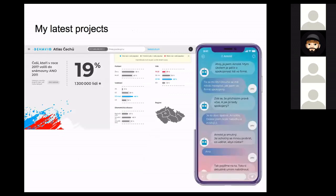One of the latest projects I was working on was Atlas Chechu from Behavio, which is a research tool for marketers. I really recommend you to look at this tool even if you're not a marketer yourself, because there's data analysis for 1,000 Czech people. The second latest project I'm currently working on is an HR chatbot — Arnold HR chatbot — for which I was doing data visualization and data analysis.